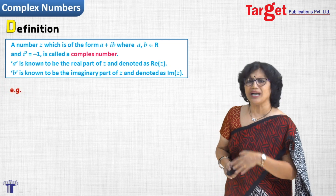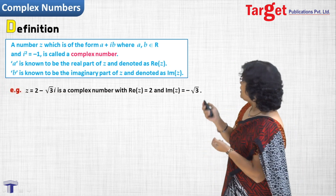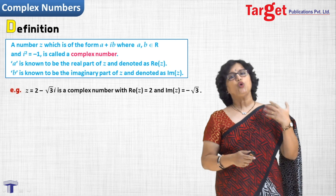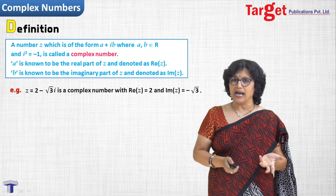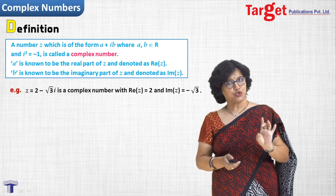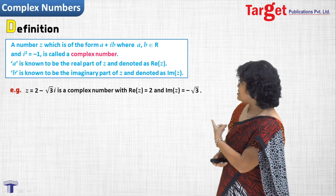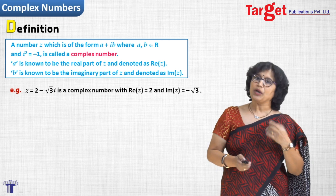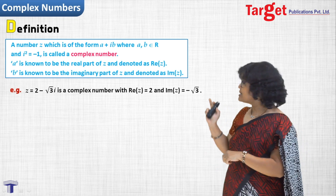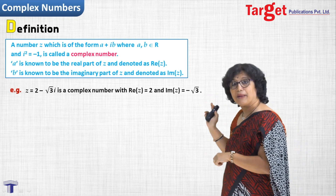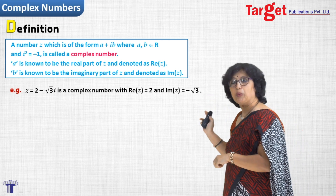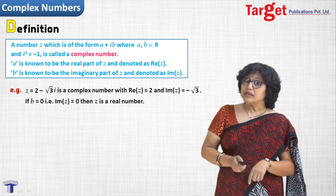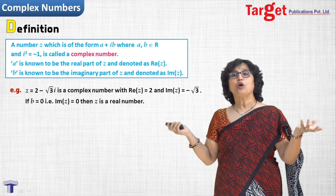Let us take one example. If I write 2 minus root 3 times i, then what is the real part? It is 2. And what is the imaginary part? That is minus root 3. So Im(z) equals minus root 3.